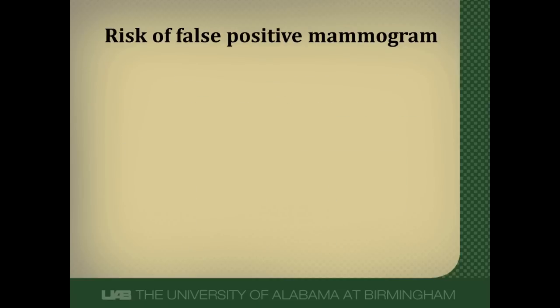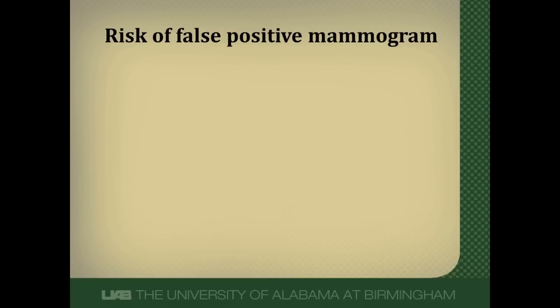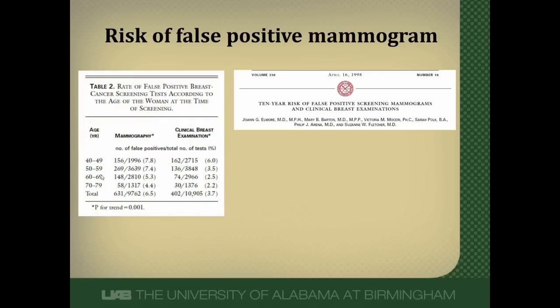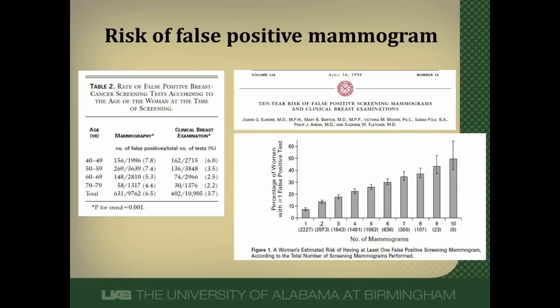There's empiric data on this from a New England Journal of Medicine article on mammograms. Younger women have a greater false positive risk than older women. Interestingly, if you do a mammogram every single year starting in a woman's 40s, by the end of that 10-year period, half of the women are going to have had a false positive mammogram. False positives are a real thing and happen quite commonly.